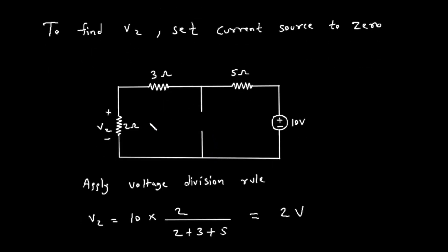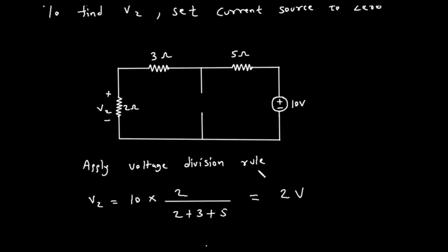In this new circuit, the 2 ohm, 3 ohm, and 5 ohm resistors are all in series with the 10 volt source. We need to find the voltage V2 across the 2 ohm resistor. We can do this using the voltage division rule.